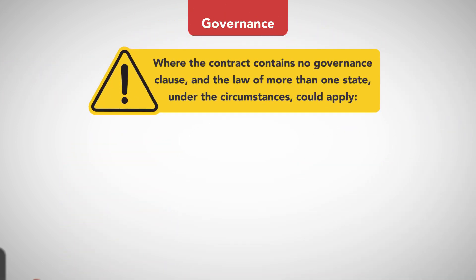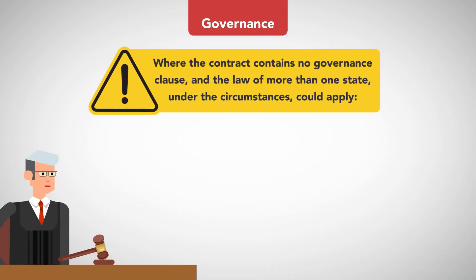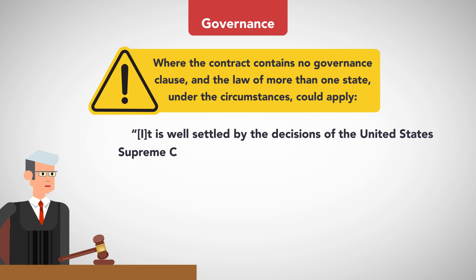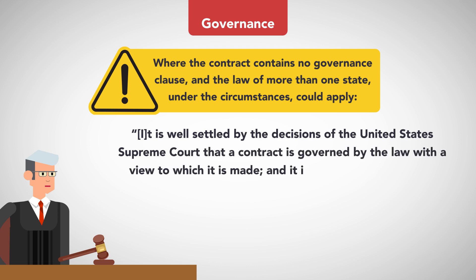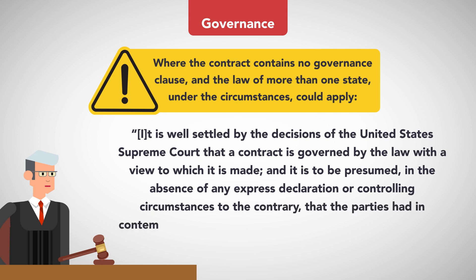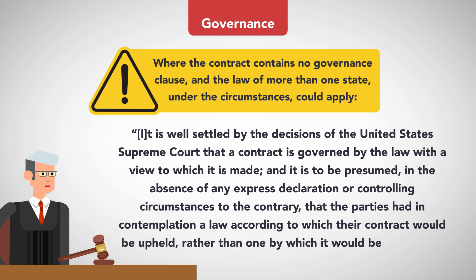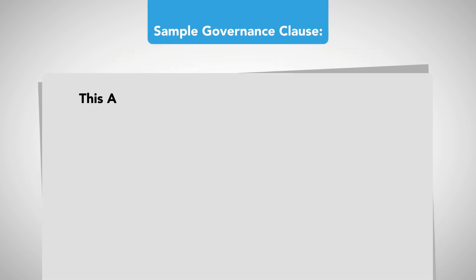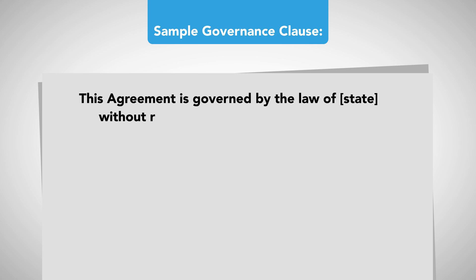Where the contract contains no governance clause and the law of more than one state under the circumstances could apply, quote: "It is well settled by the decisions of the United States Supreme Court that a contract is governed by the law with a view to which it is made, and it is to be presumed, in the absence of any express declaration or controlling circumstances to the contrary, that the parties had in contemplation a law according to which their contract would be upheld, rather than one by which it would be defeated." Unquote. Sample governance clause: this agreement is governed by the law of state without regard to its conflict of laws rules.